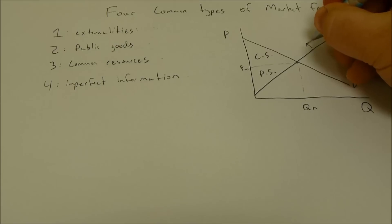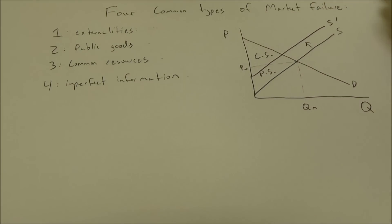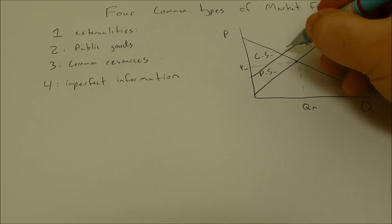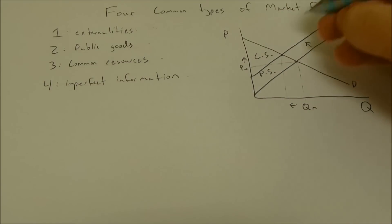So there's an additional social cost that's not being included in their supply curve. So the true equilibrium should occur here at a lower quantity and a higher price. But the market equilibrium occurs here.